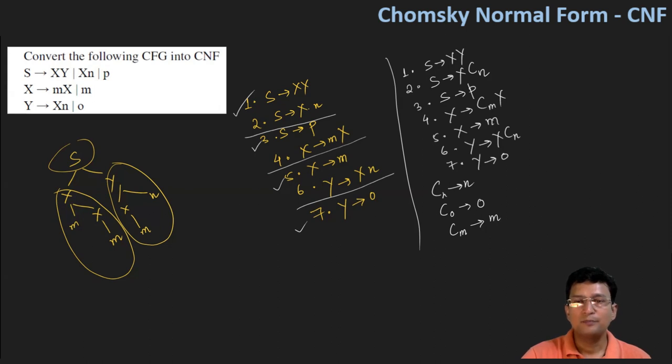Now, I think Co we don't need, so we remove it. There is no production with o on the right-hand side along with a non-terminal symbol. Let's write these as production 8 and production 9. These are the production rules.